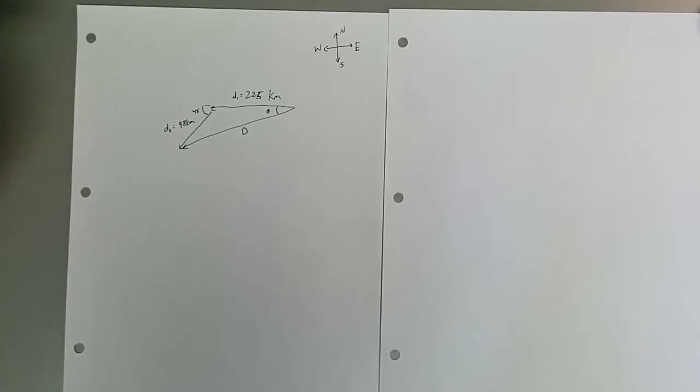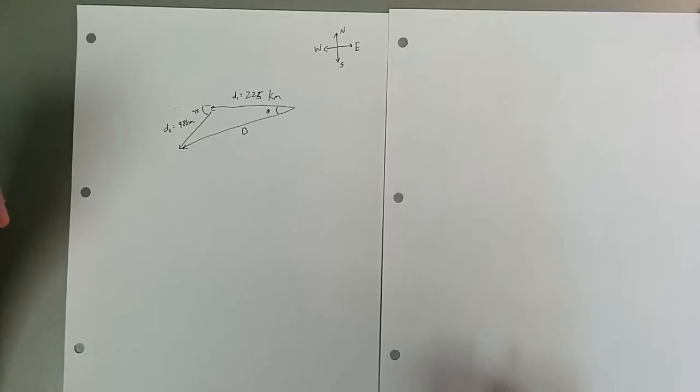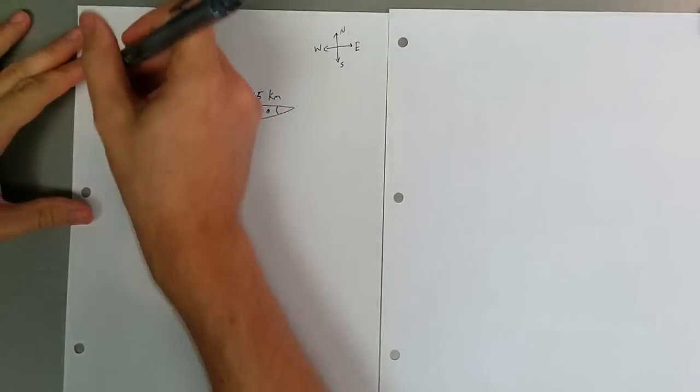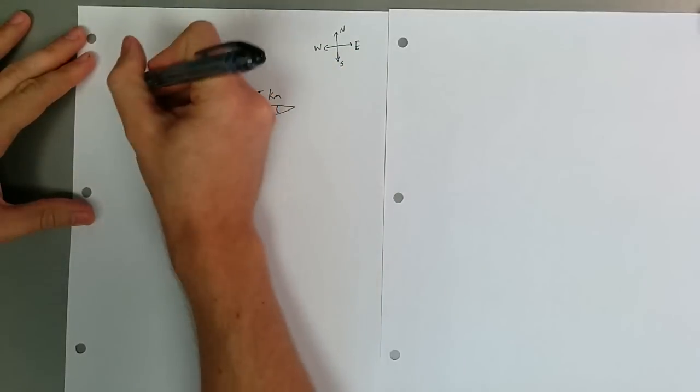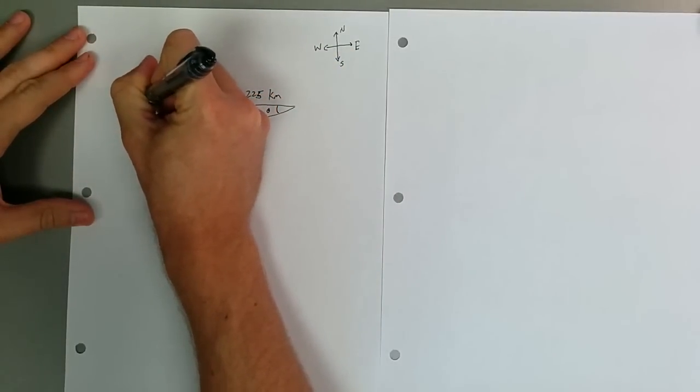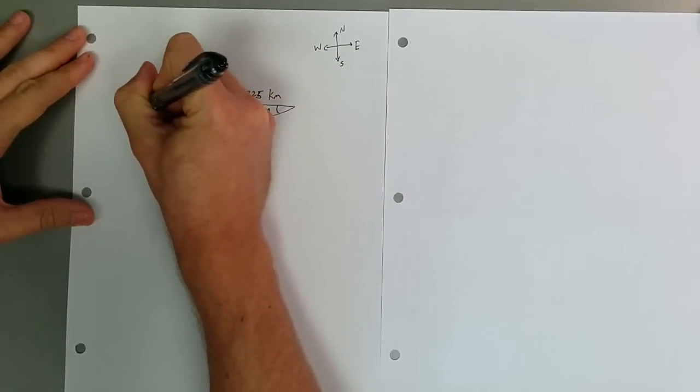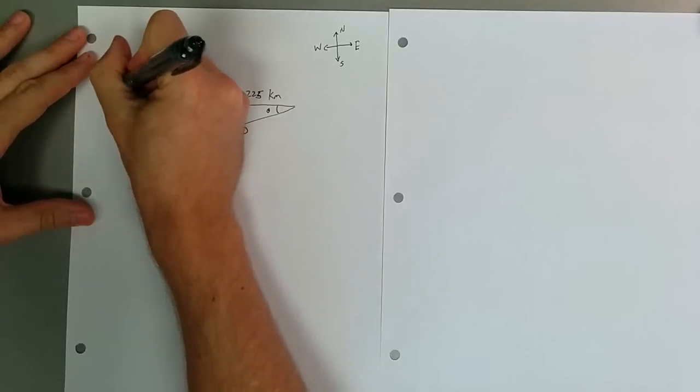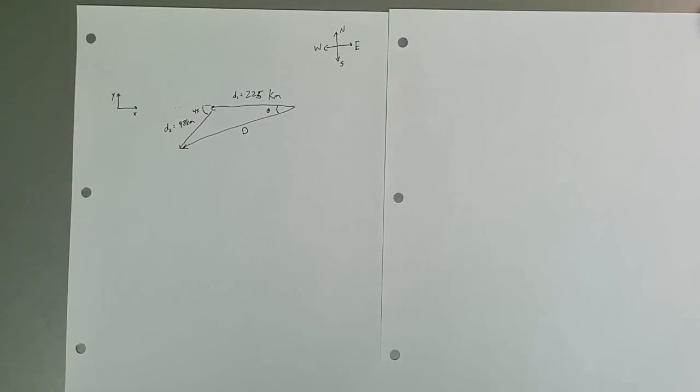So the first thing we need to do is actually set up a coordinate system. You see that this is kind of all floating in nowhereville. So I'm going to do standard type of coordinates where we call that our x and that our y. In this case, east is positive x, west is negative x, y is north, negative y is south. And now we can go ahead and solve this.